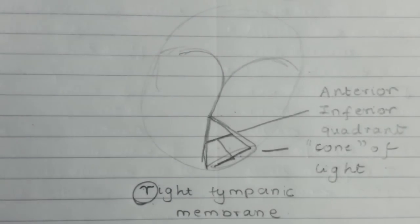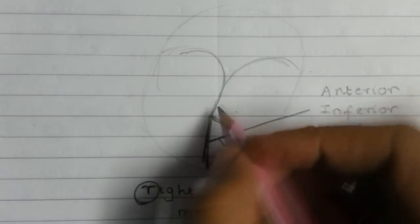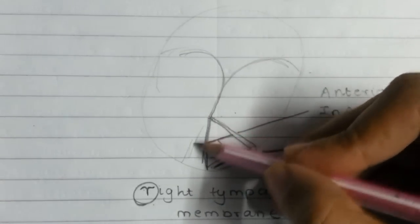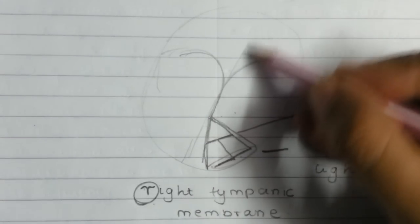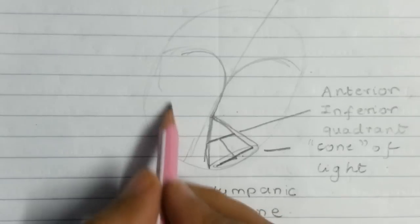We divide the tympanic membrane into four quadrants. It is divided into four quadrants by two lines. One which is passing in the axis of the handle of the malleus and other which is at right angles to the first line intersecting at the umbo.